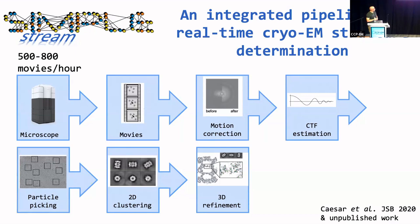It's optimized CPU code that runs extremely fast. We also do patch CTF estimation so that you will end up with each point on the micrograph having associated focus values.